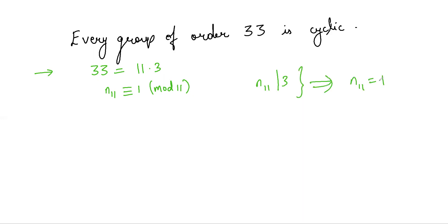So there exists a unique Sylow 11 subgroup and that is cyclic since 11 is prime. Any group of order 11 is cyclic. Let that group be H and let x generate it.